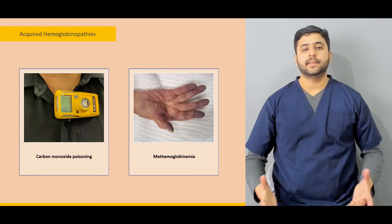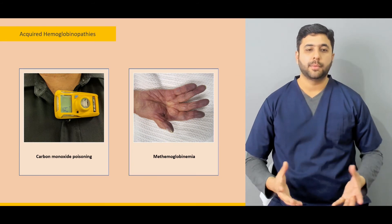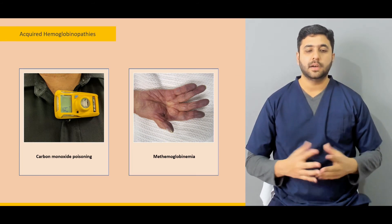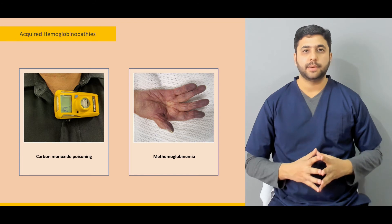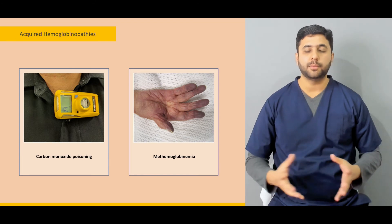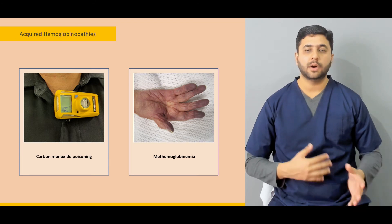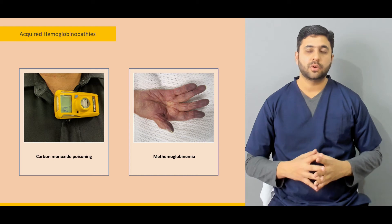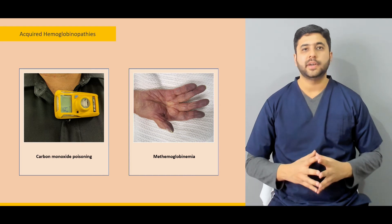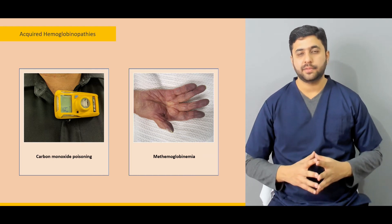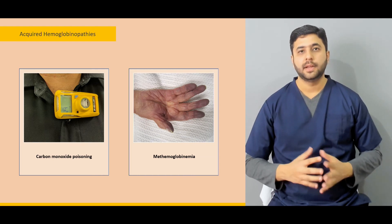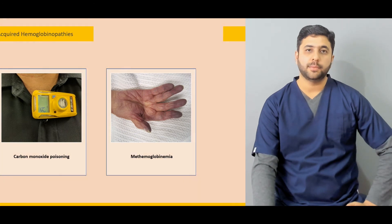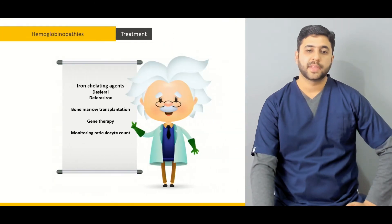In the later part of the lecture, we are going to talk about the acquired hemoglobinopathies like carbon monoxide poisoning and methemoglobinemia — how do we differentiate them on a clinical basis, what are the definitive tests we have to diagnose them, and what are the treatment options for these acquired hemoglobinopathies?